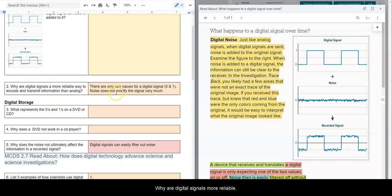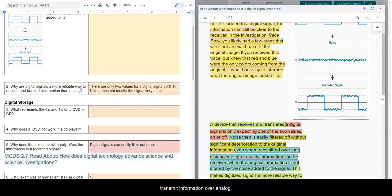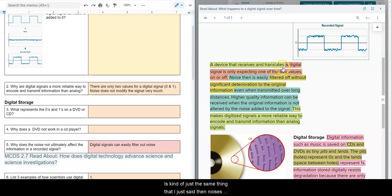Why are digital signals more reliable? And why are they preferred to be used to encode and transmit information over analog? It's the same thing that I just said. The noise is easy to filter. And we can filter without significant deterioration to the original information. Even when we transmit over long distances from outer space, we're still able to figure out the different 0s and 1s, and we're able to figure out the original information even with the noise added.